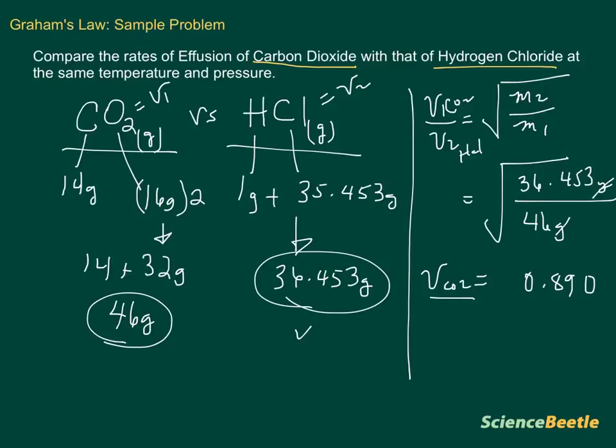This is going to be relative to the velocity of carbon dioxide per the velocity of HCl. When we do this, we know that carbon dioxide is going to move 0.890 times as fast as the velocity of HCl. In this case, carbon dioxide is actually going to move a bit slower.